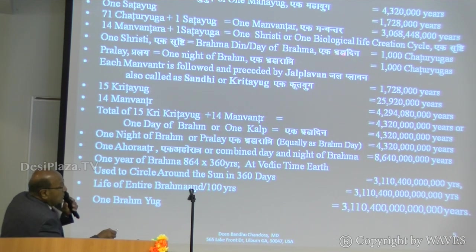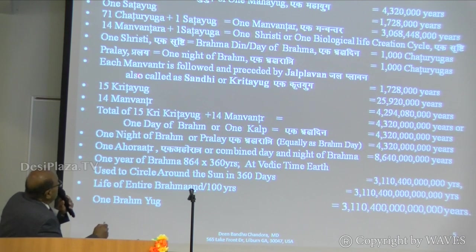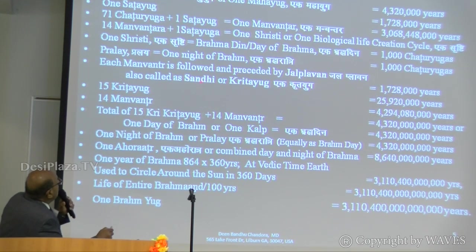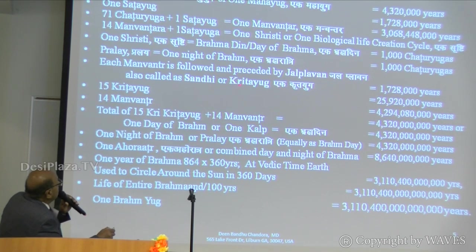The day is followed by the night, which is called Pralai. One night of Brahma comes to the same amount as the daytime. Each Manvantara is followed by Jal Plavan — meaning deluge — and that is called Sandi. That time is equal to one Krita Yuga. Krita Yuga is the same as one Sat Yuga, but because it follows after the Manvantara, the name is Krita Yuga.